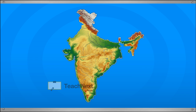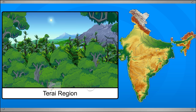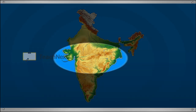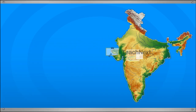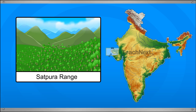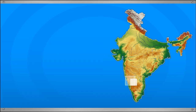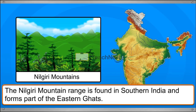As you travel down the lower slopes of these mountain ranges, you will find thick forest known as the Therai region. India has other smaller mountain ranges too. These you will find in the central and southern parts of the country. The Satpura Range is found in central India and forms part of the Western Ghats, while the Nilgiri Mountain Range is found in southern India and forms part of the Eastern Ghats.